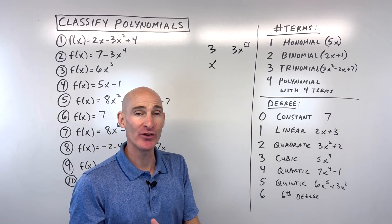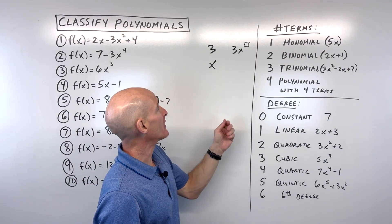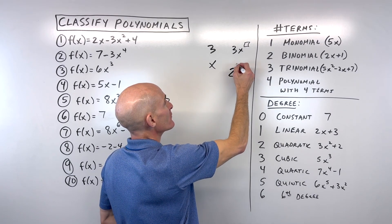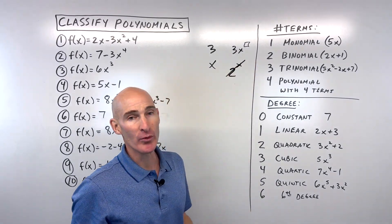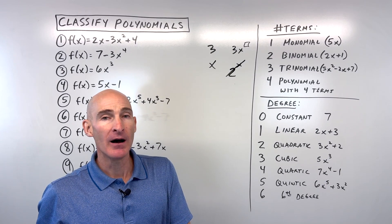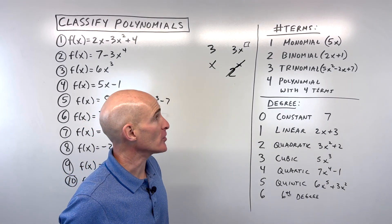You don't want the variable in the denominator. You don't want something like this where the variable is in the exponent position. That's not a polynomial. So you want to think about a sum or difference of monomials.